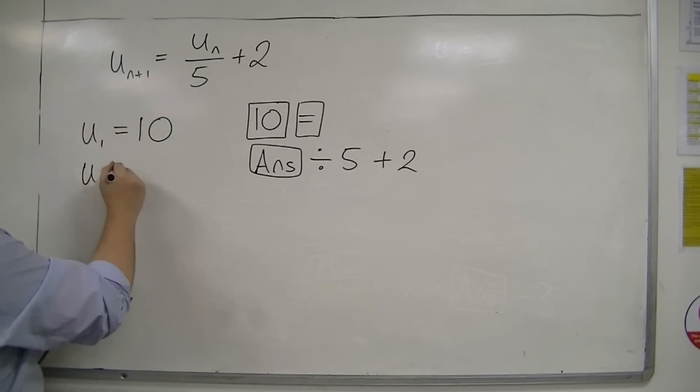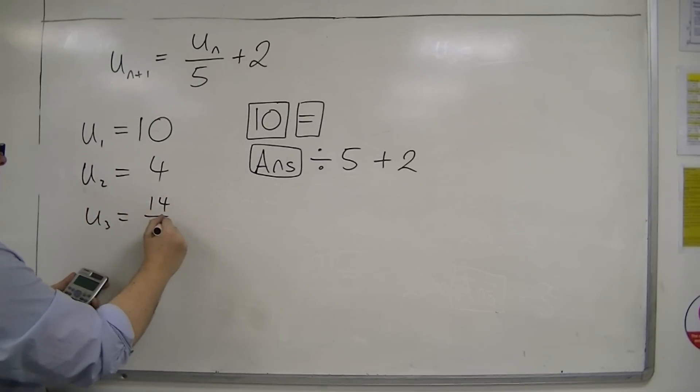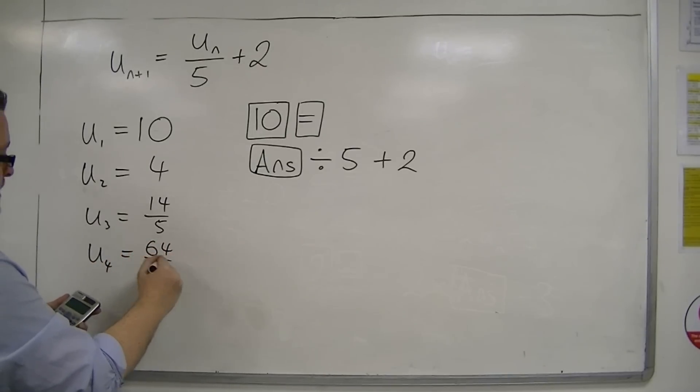You should get 4. Press equals again, and you should get 14 over 5. Press equals again, and you should get 64 over 25.